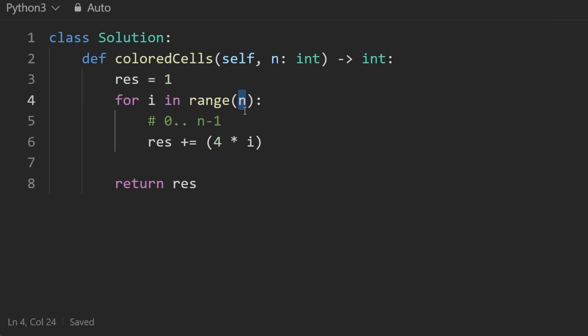What if n was two? Then this is going to iterate from zero to one. On the first iteration, nothing's going to happen. On the second iteration, four times one is going to be added to the result. And if it were greater than that, it would take four times two, four times three, four times four, etc, etc,